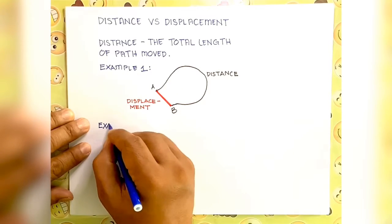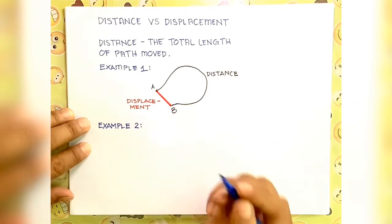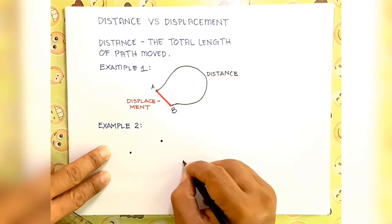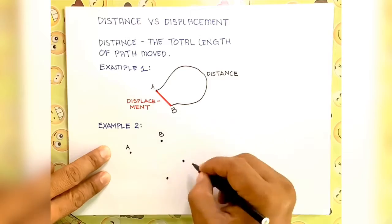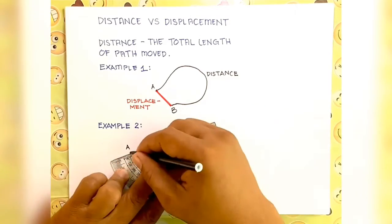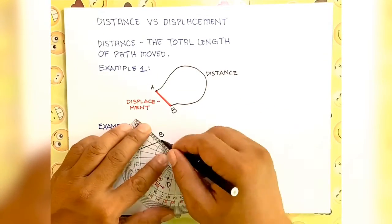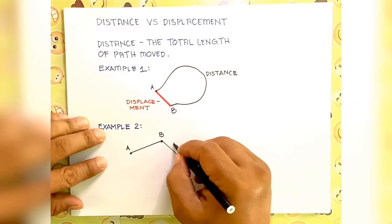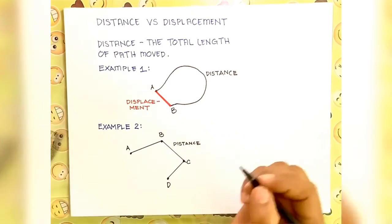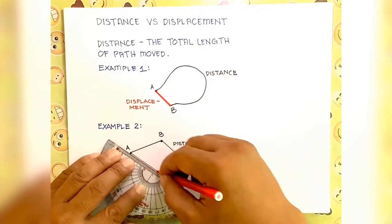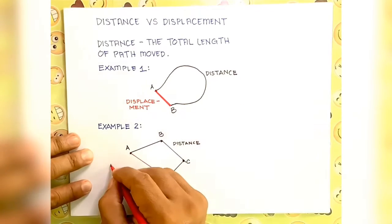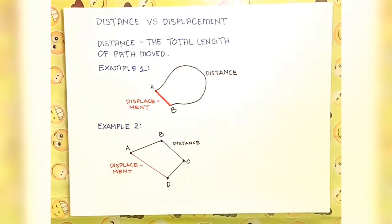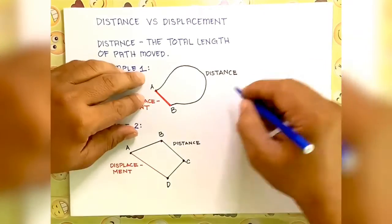Another example will be a series of different distances: A to B, B to C, and C to D — so these are the distances. Now, the straight line again, or the difference between the initial position and the final position, is again called the displacement.